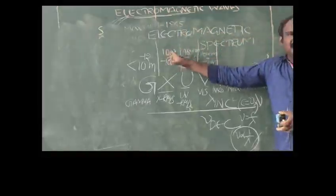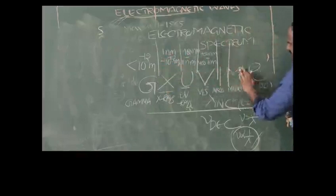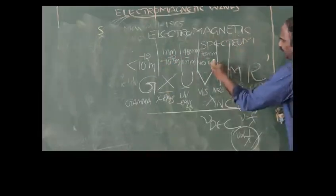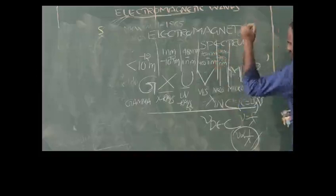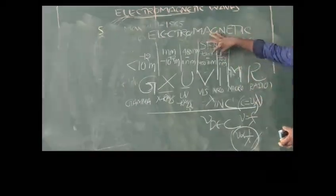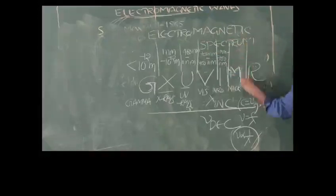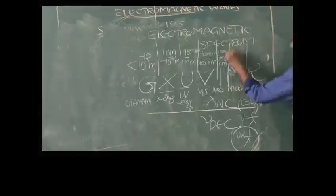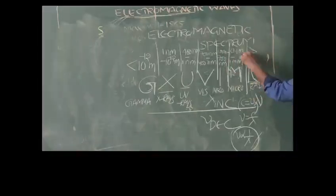For infrared, wavelength is 1 mm to 700 nm. For microwave, it is 0.1 m to 1 mm. For radio waves, wavelength is greater than 0.1 meters. Each category's upper boundary becomes the starting point for the next, making the spectrum easy to recall.